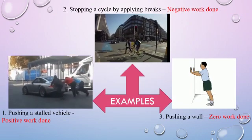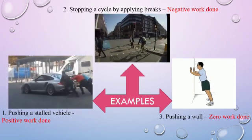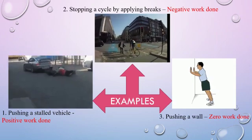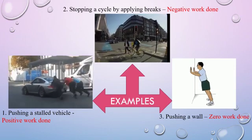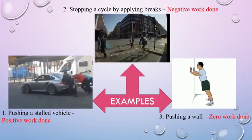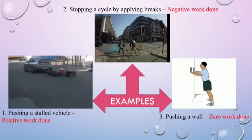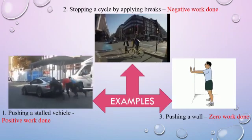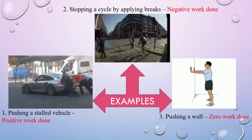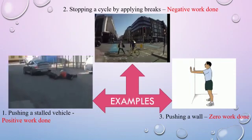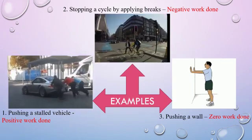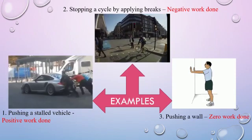Let us see some examples. Example 1: pushing a stalled vehicle. Here, applied force and displacement of the object are in the same direction, so work done is positive. Example 2: stopping a cycle by applying brakes. In this example, applied force and displacement are in opposite directions and hence work done is negative. Example 3: pushing a wall. Here, force applied on the wall does not displace the wall and hence the work done by the force is 0.